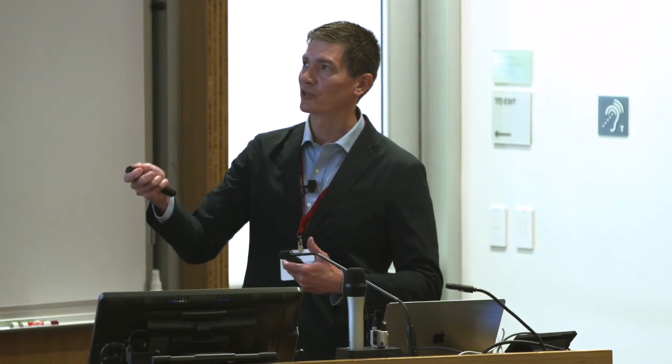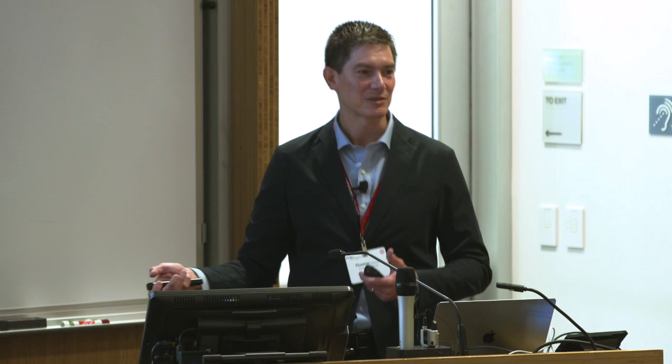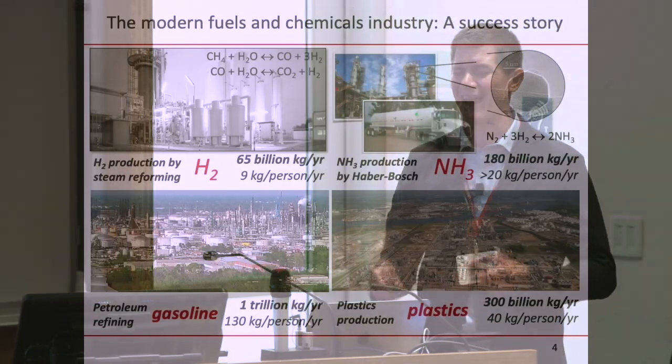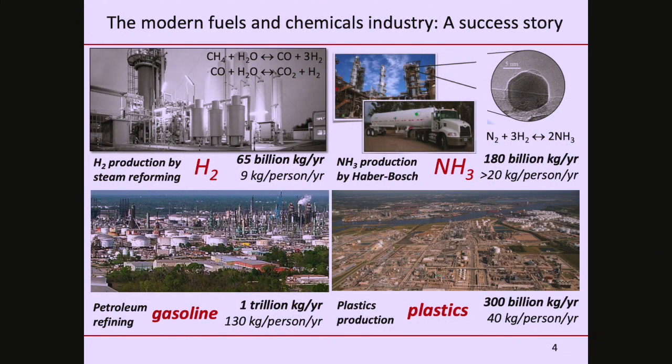I focused on petroleum to make specific examples, but we could have the same slide for natural gas or coal — they're all fundamentally the same types of molecules. This leads into what I think is one of the greatest successes of humankind: developing the modern fuels and chemicals industry. It's spectacular that we can deliver these molecules like hydrogen — about 60 billion kilograms a year — almost all coming from fossil fuels, almost all from steam methane reforming.